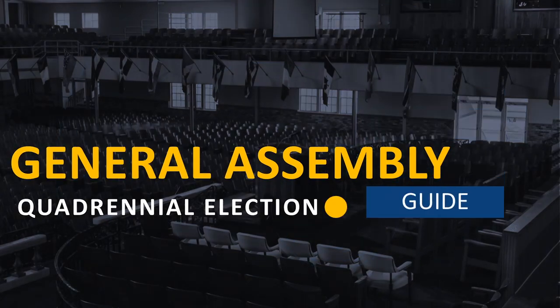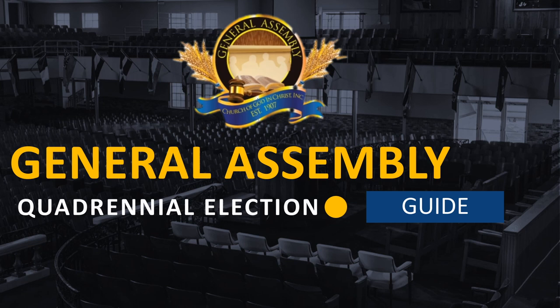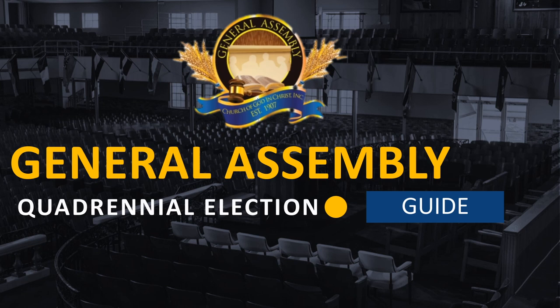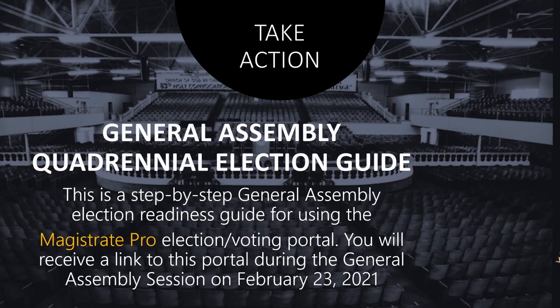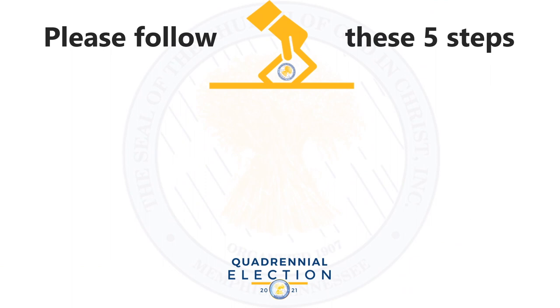The Church of God in Christ General Assembly Quadrennial Election Guide. This is a step-by-step General Assembly Election Readiness Guide for using the Magistrate Pro Election Voting Portal. You will receive a link to this portal during the General Assembly session on February 23, 2021. Please follow these five steps.